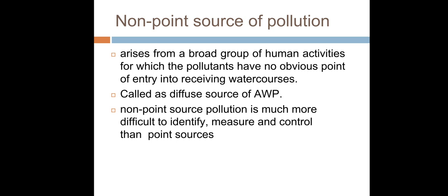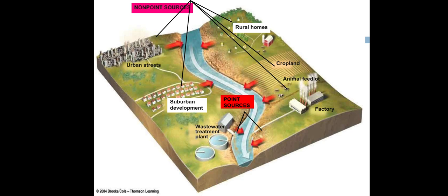Non-point sources are also called diffuse sources of agriculture water pollution. These include urban streets, rural cropland, animal feed operations, and suburban development areas. Point sources include wastewater treatment plants.